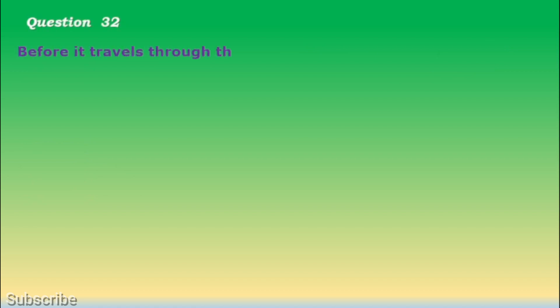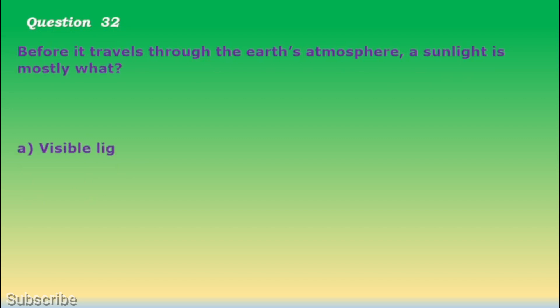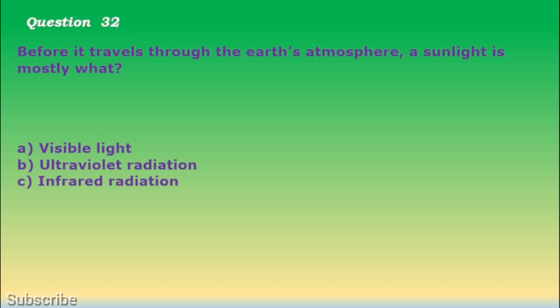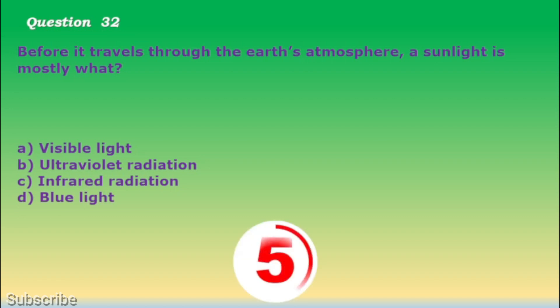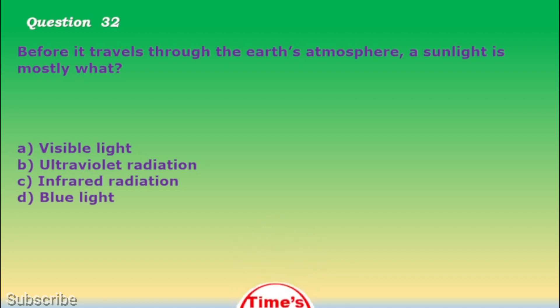Question number 32. Before it travels through the Earth's atmosphere, sunlight is mostly what? a. Visible light, b. Ultraviolet radiation, c. Infrared radiation, d. Blue light. The correct answer is letter c. Infrared radiation.